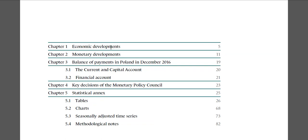Usually there's a summary of economic developments in the country as well as the global economy. A lot of times they'll talk about the same sectors you cover in macroeconomics class — for example, consumption, investment, government spending, the foreign sector — and they'll discuss unemployment rates, inflation rates, and so forth. Monetary developments are important for a central bank, especially those that issue their own currency. Then the international sector gets its own section with the balance of payments — the current, capital, and financial accounts.